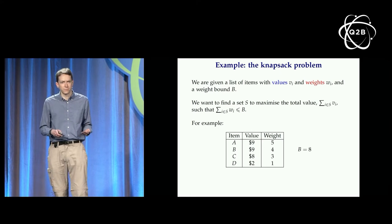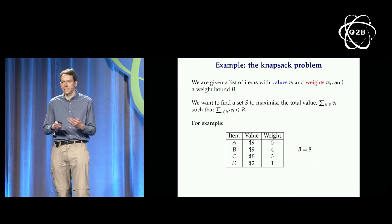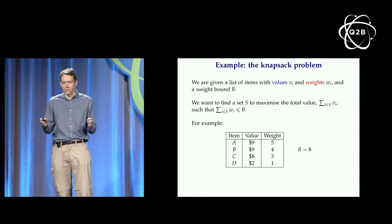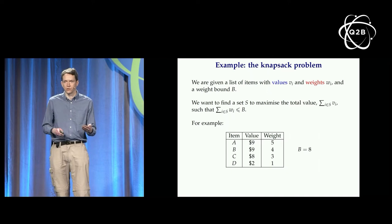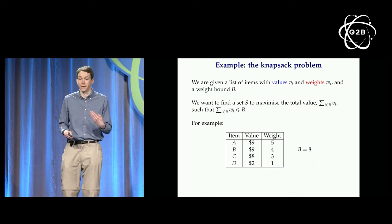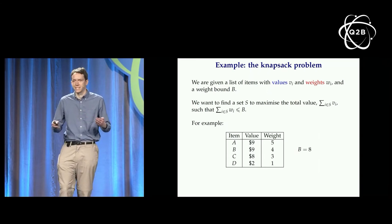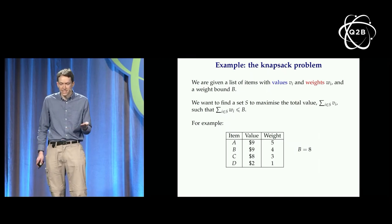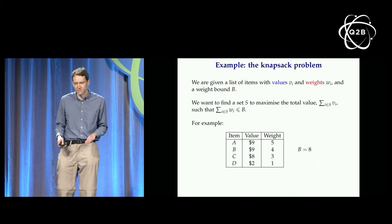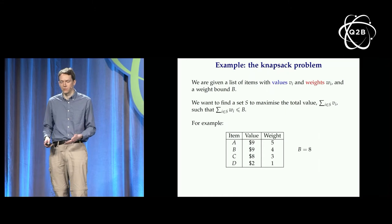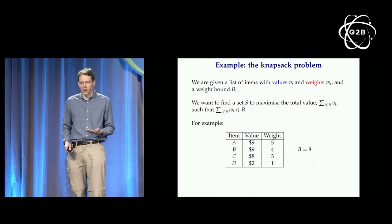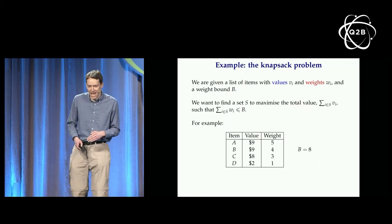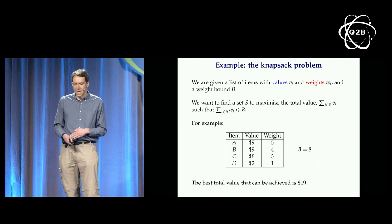What we're looking for with branch and bound is not an efficient algorithm, but something running in exponential time better than a naive approach. The most naive algorithm looks over every possible subset of items. Here's an example of the knapsack problem with four items having some values and weights, and an overall bound of eight on total weight. The best packing is items B, C, and D, achieving value 19, and we can't do better than this.